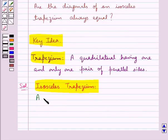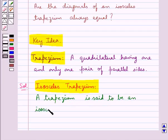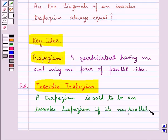A trapezium is said to be an isosceles trapezium if its non-parallel sides are equal.